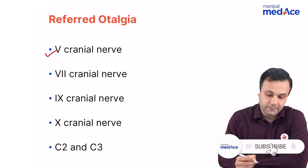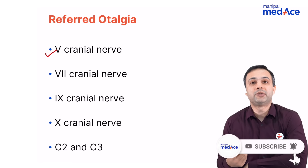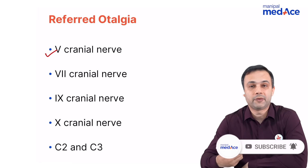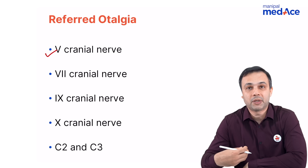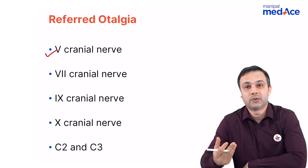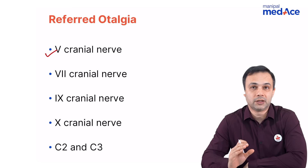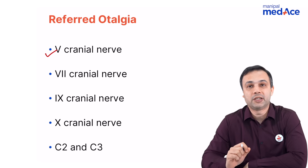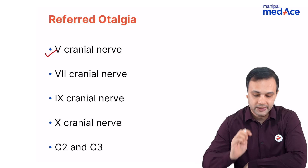One of them is the fifth cranial nerve — any problems in the oral cavity. For example, there can be a lesion on the tongue, a lesion in the buccal mucosa, or in the floor of the mouth. All these are referred by the fifth nerve. Along with that, we have temporomandibular joint disorders or dental issues which are also referred by the fifth nerve to the ear.